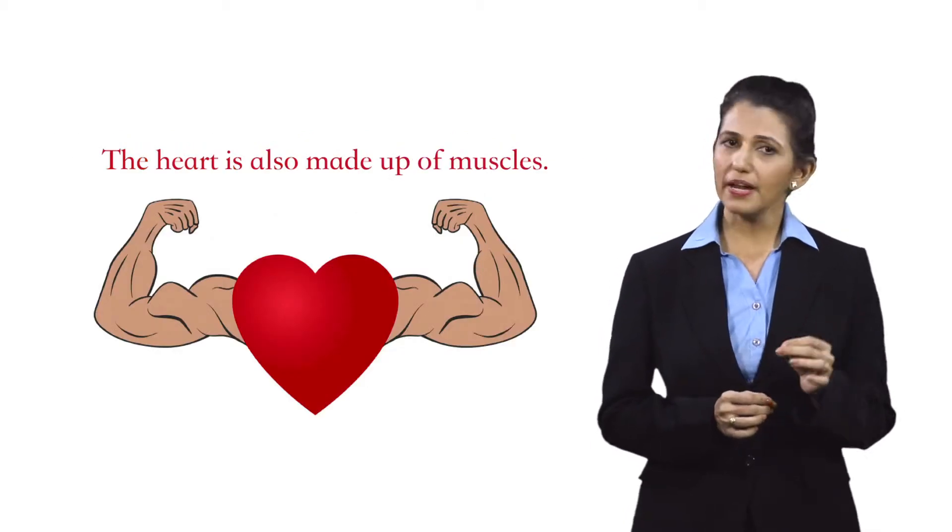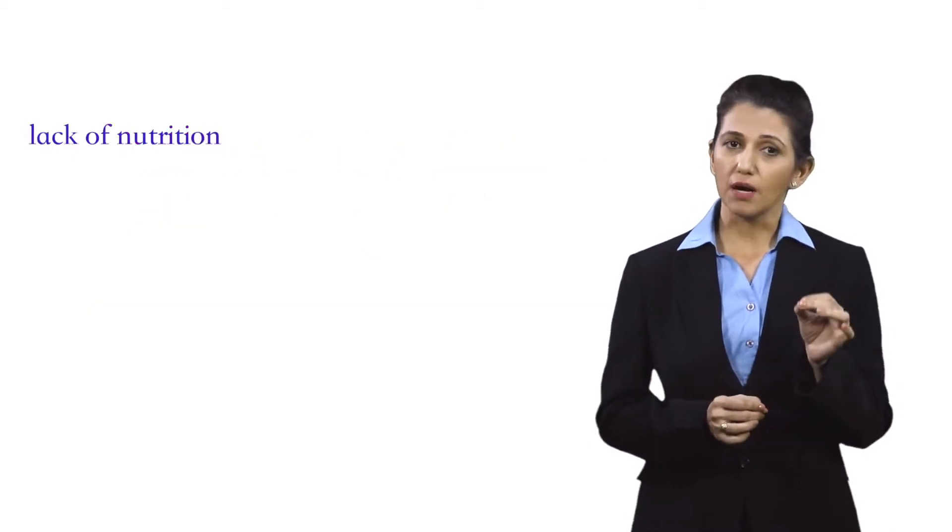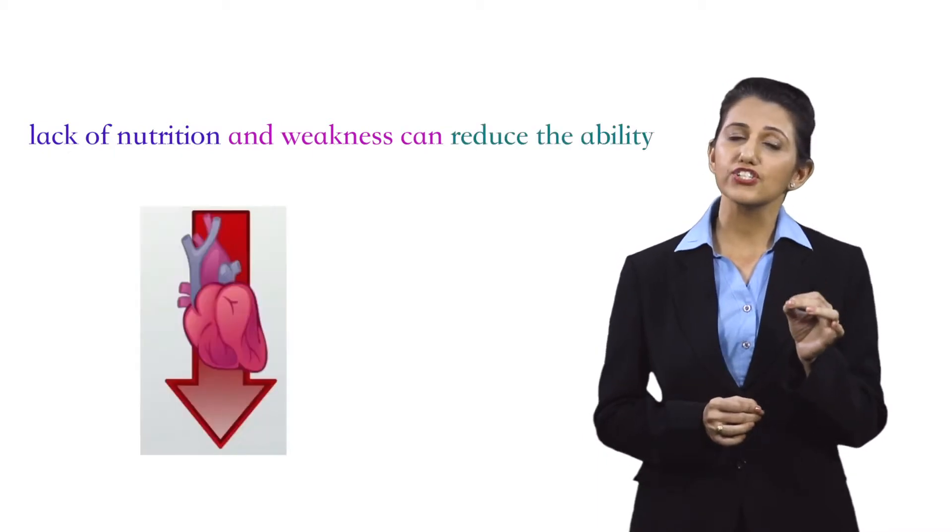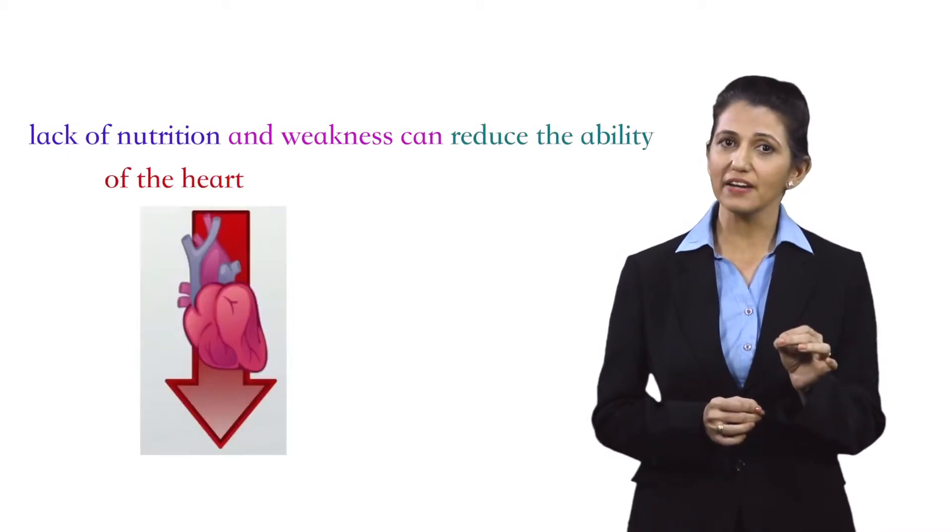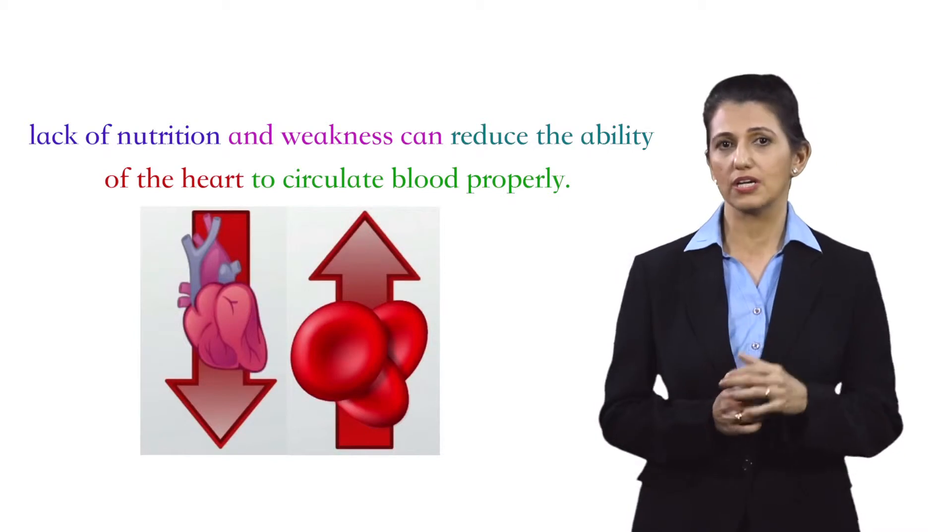The fourth adverse effect is poor blood circulation. The heart is also made up of muscles. Lack of nutrition and weakness can reduce the ability of the heart to circulate blood properly.